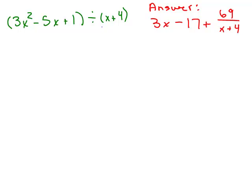3x² - 5x + 1 divided by x + 4. And over here I'm reminding you what we got for the answer when we did long division. Here are the steps. We take what we're dividing by and you're going to set it equal to 0 and solve for x. x equals -4. That's the first step.